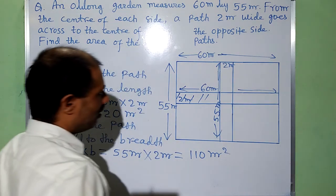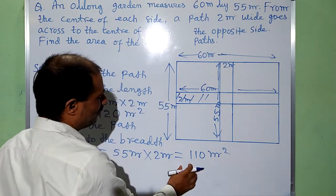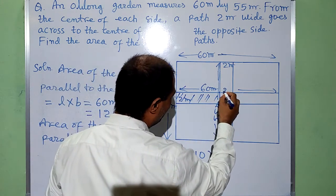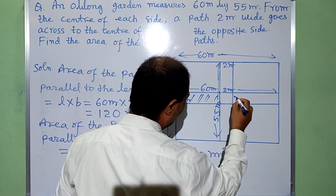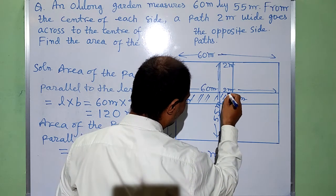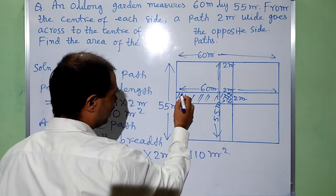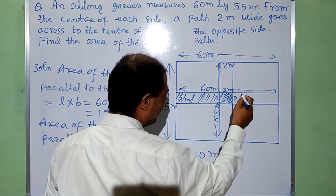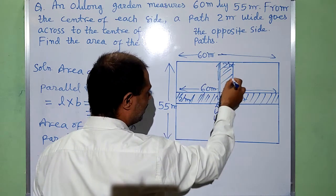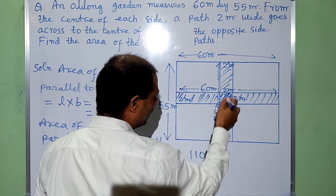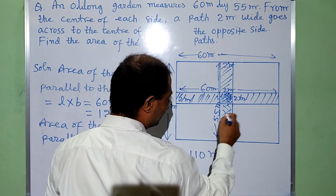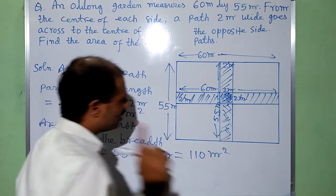Now, when we add area of these two paths, then this path is common: 2 meter and 2 meter. This path is common, like this. This path is added the first time, and a second time also when we find its area, again this path is added.